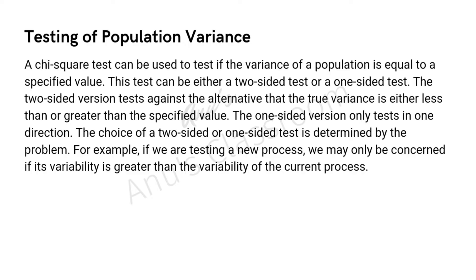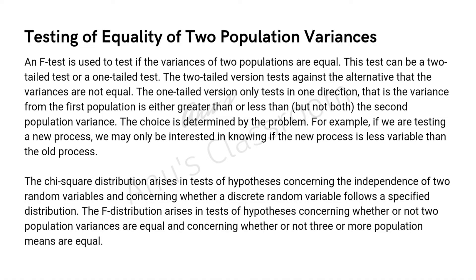For example, if we are testing a new process and we are only concerned about whether the new process will be more variable than the current process — that is, only testing if it is better — then we go for a one-sided test. If we are trying to find out how the new process compares to the old process, whether it is better or worse, then we go for a two-sided test, checking both directions.